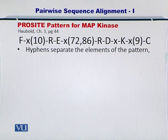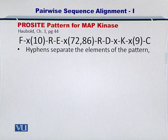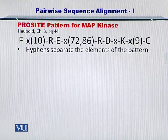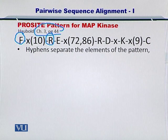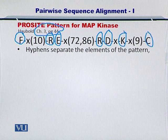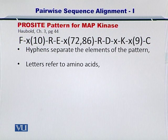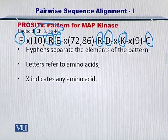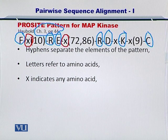Let's take a look at the ProSite patterns again. ProSite patterns allow you to build templates for inexact matching. This is from your textbook chapter 3, page 44. These are the amino acids as you already know. X represents any amino acid from the 20 amino acids — essentially, when you have an X anywhere in the ProSite pattern, it means you can place any amino acid there.